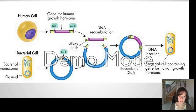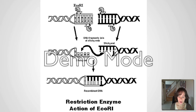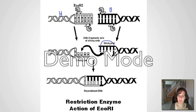We cut with restriction enzymes — let me show you why. Here is your human DNA and here is your bacterial plasmid. When you cut both using the same enzyme, they come up with sticky ends. Once you put them together, those sticky ends stick together, and now you have your recombinant DNA. Before I move on, I want you to come up with two other examples of genetic engineering using plasmids.